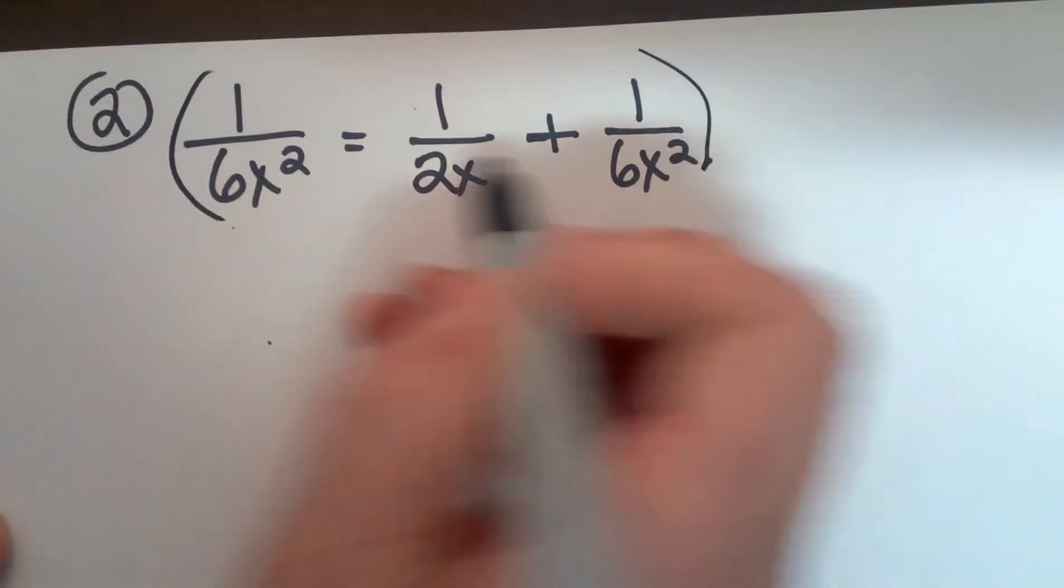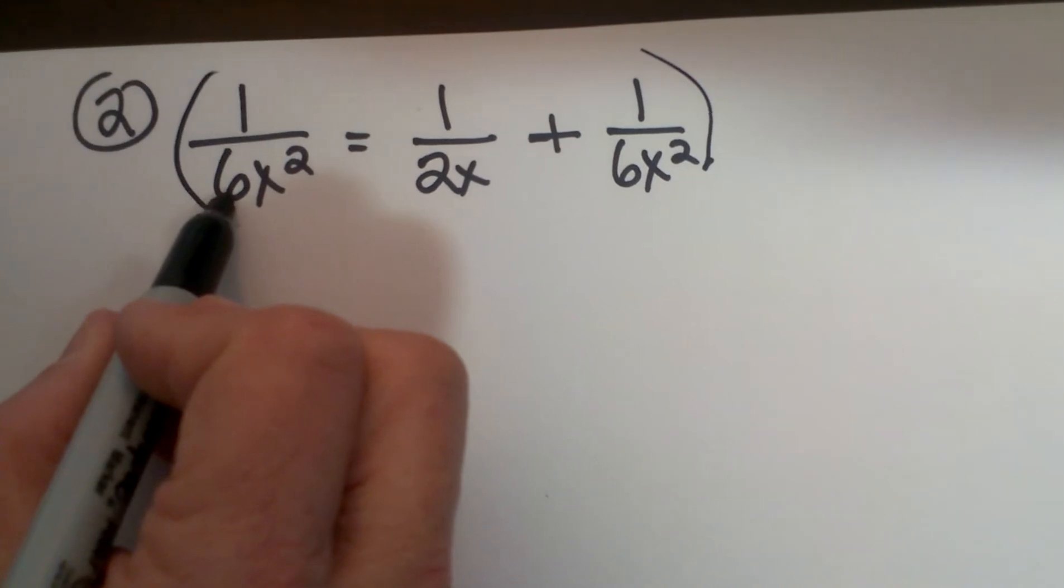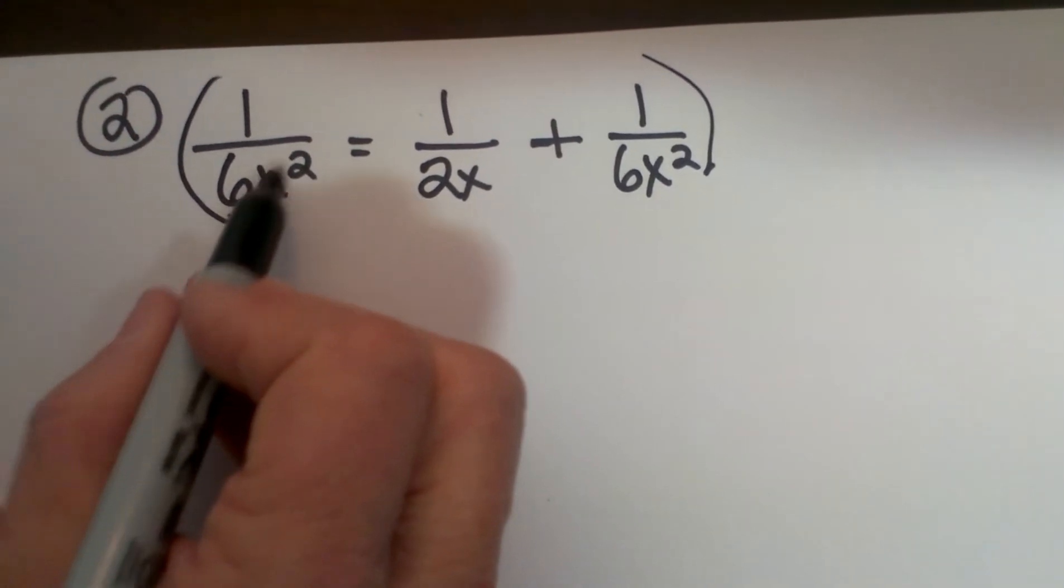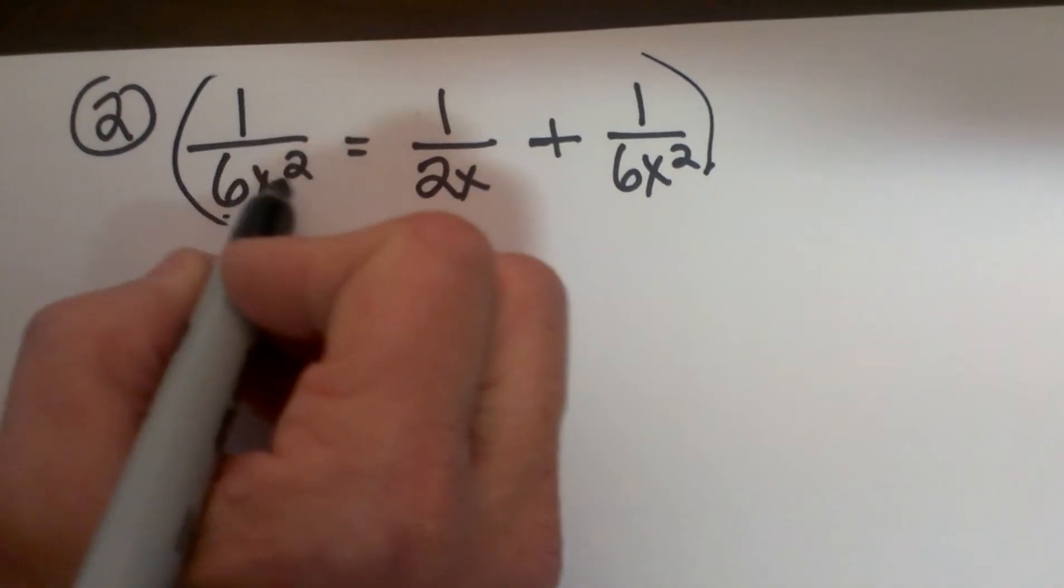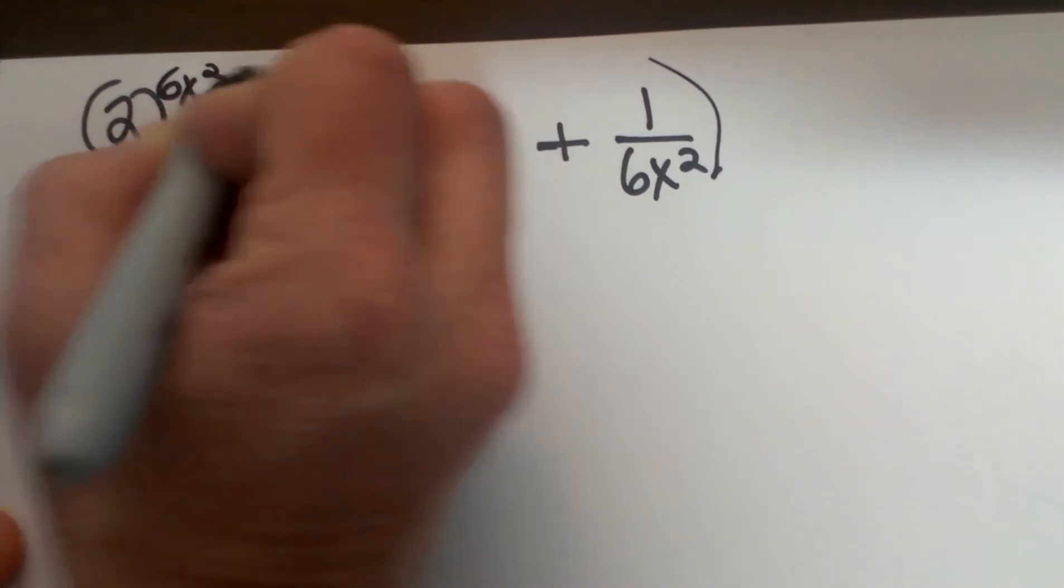Ok to clean this up I have to decide what my common denominator is and that is a 6 and an x squared. So you always want to take the variable to the highest power. So I am going to take 6x squared and I am going to multiply it by every term.